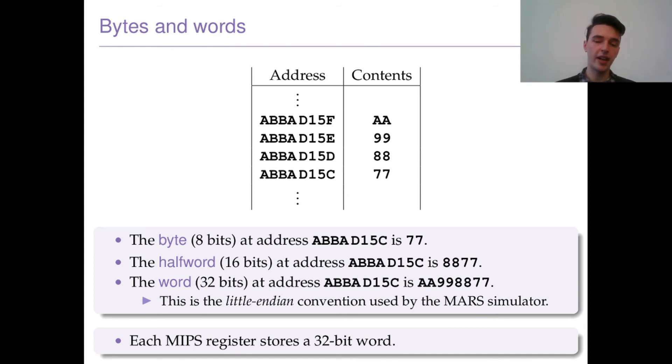The word is a little bit trickier. The word at ABBAD15C is represented by the three memory addresses above it and itself. In this case, we start at ABBAD15F, we read AA, and then it's 99, then it's 88, and then it's 77. So the word at address ABBAD15C is AA998877. This is little-endian convention, which is used by the MARS simulator. It's also used by my laptop. Big-endian is maybe more common, which is the other way around.